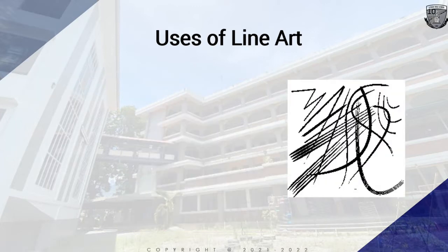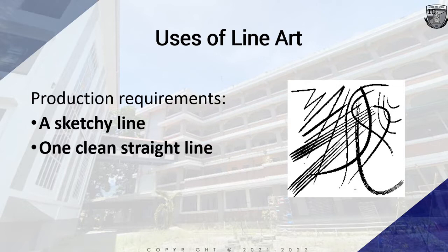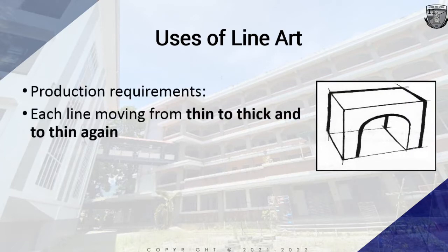Line quality is very important in cleaning up because it tells about the appearance of the line. Every production is different and will have different requirements for the type of line drawn by cleanup artists. Examples of different production requirements for line quality include: a sketchy line that suits photocopying, one clean straight line, and thick bold lines for outline with thinner lines for the character interior.